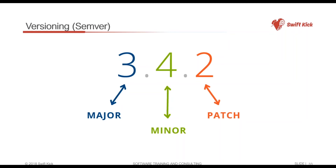Patches again depend on the team. Some teams abuse the patch version segment — they'll update a little piece of code, increment the patch, update something else, increment the patch. Eventually you get something like 3.4.112. That's fine; it's just a newer version than what you had before. But it really depends on the tool you're using.